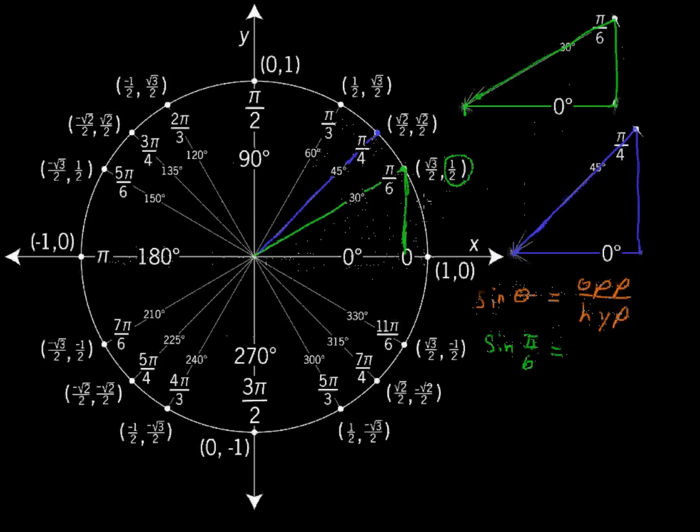So that's why we have all these coordinates written down here, and some people just like to memorize all of the coordinates, and that works okay. So the sine of pi over 6 is 1 half, that's the opposite, over the hypotenuse of 1. The hypotenuse is always 1 on this unit circle. So sine of pi over 6 just equals 1 half.